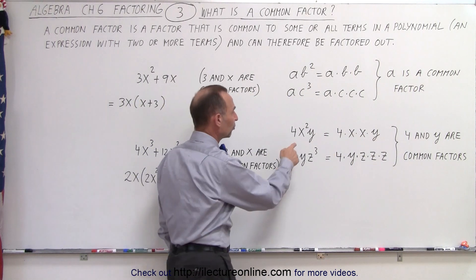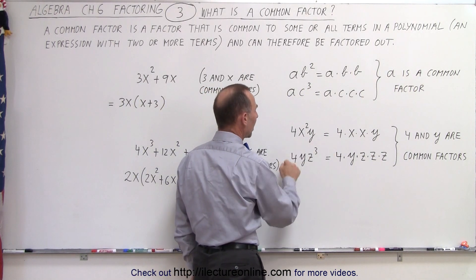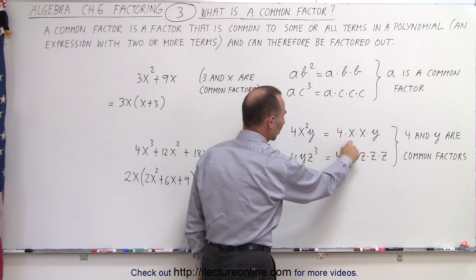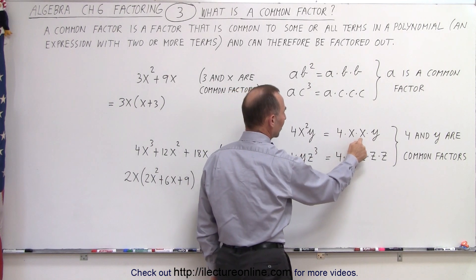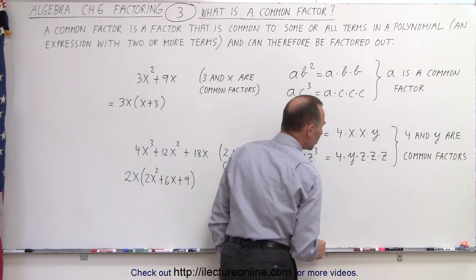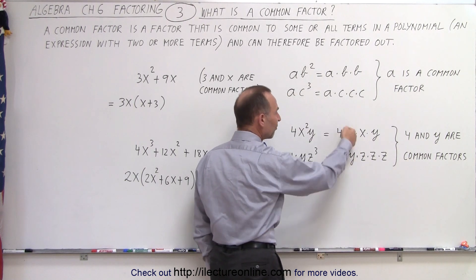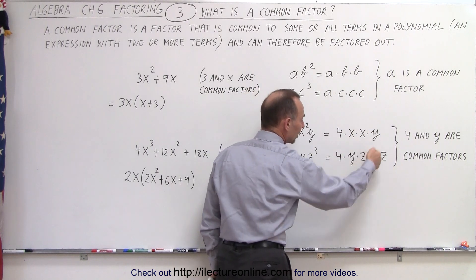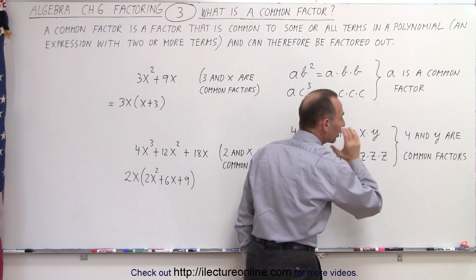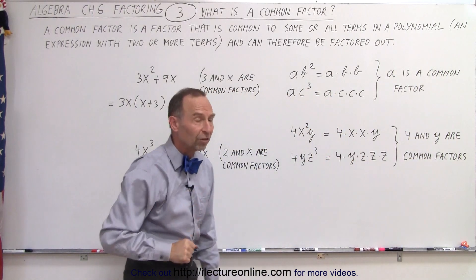If we look at these two expressions, 4x²y and 4yz³, we write them as products of their factors: 4 times x times x times y, and 4 times y times z times z times z. Notice both contain the factor 4, and both contain the factor y, which means both 4 and y are common factors to both expressions.